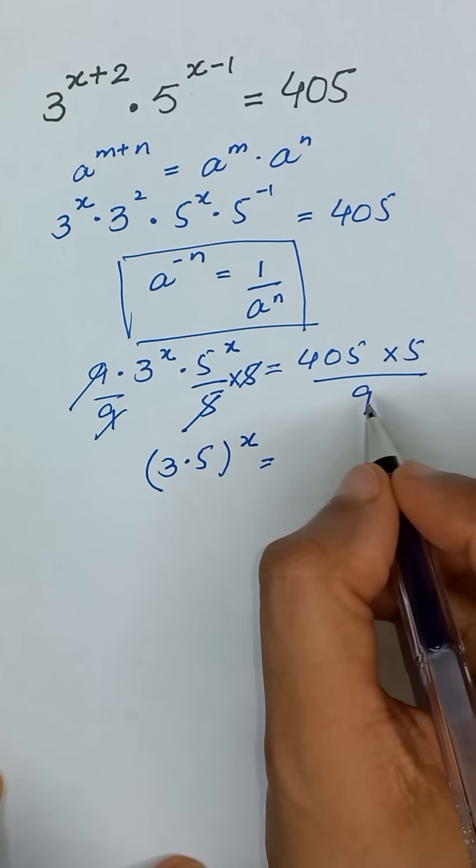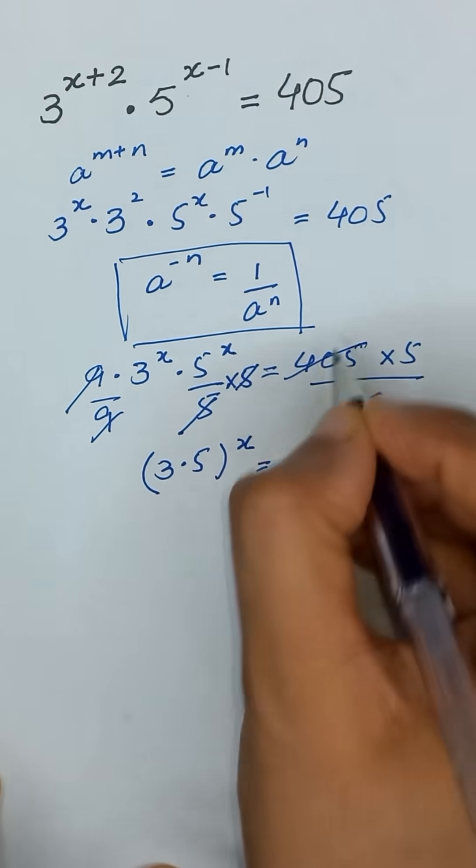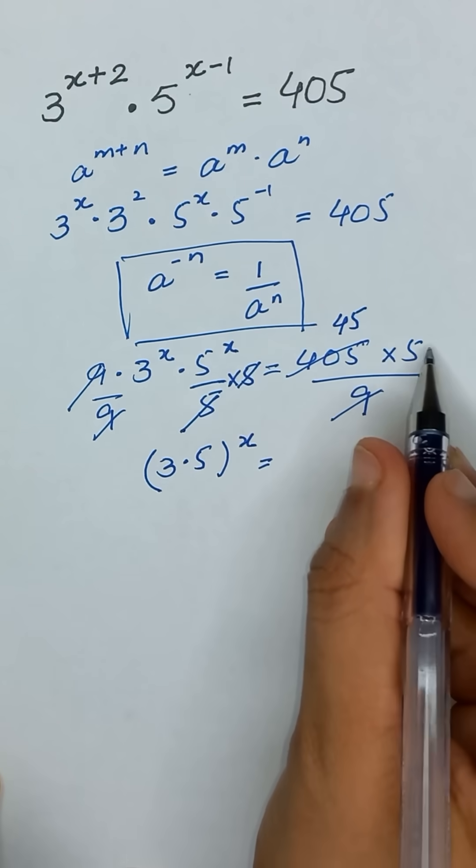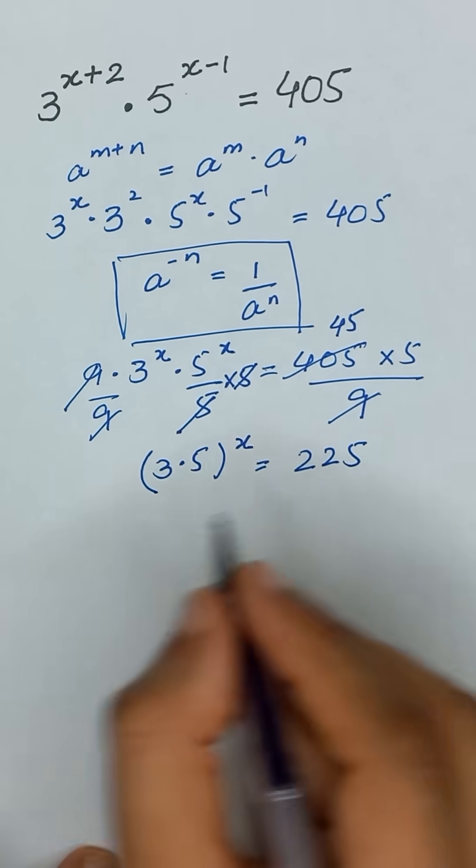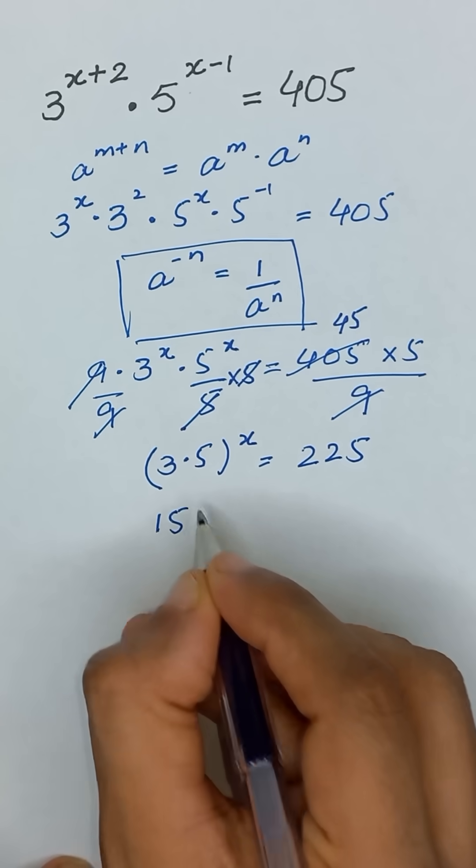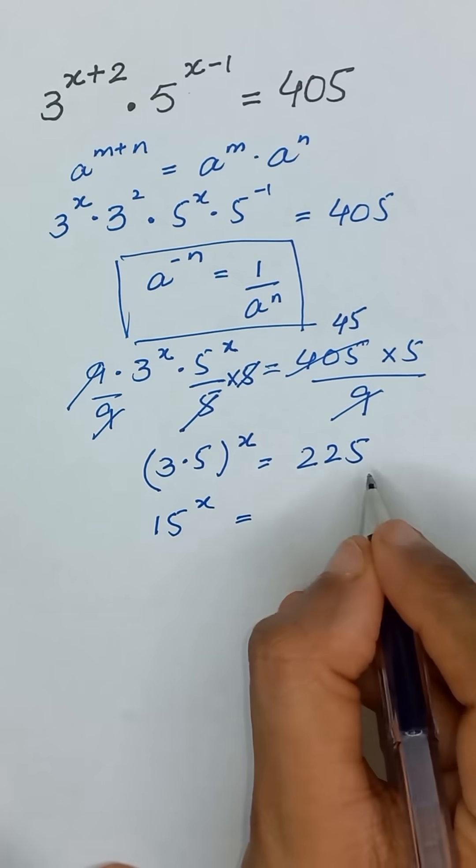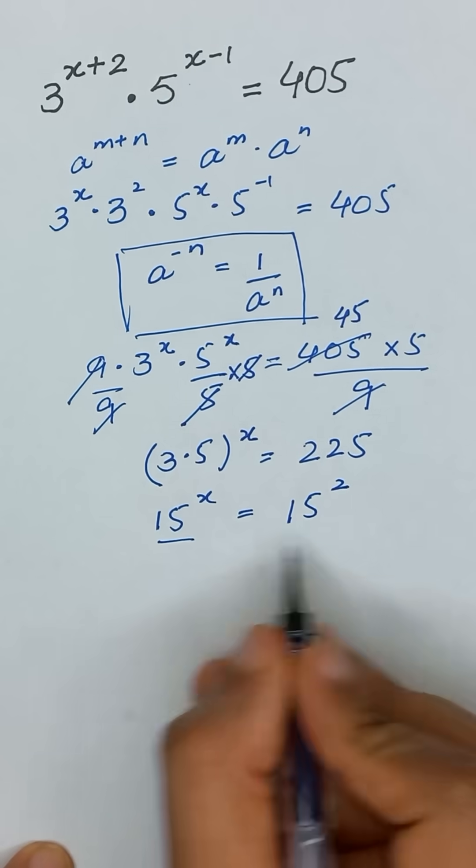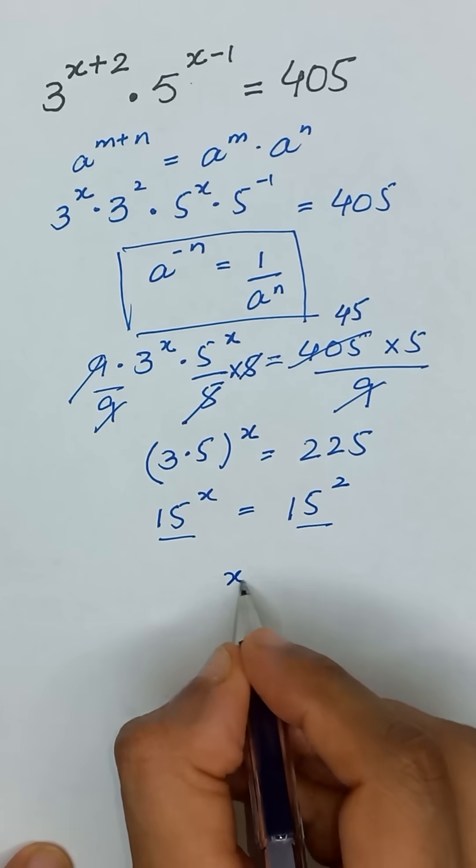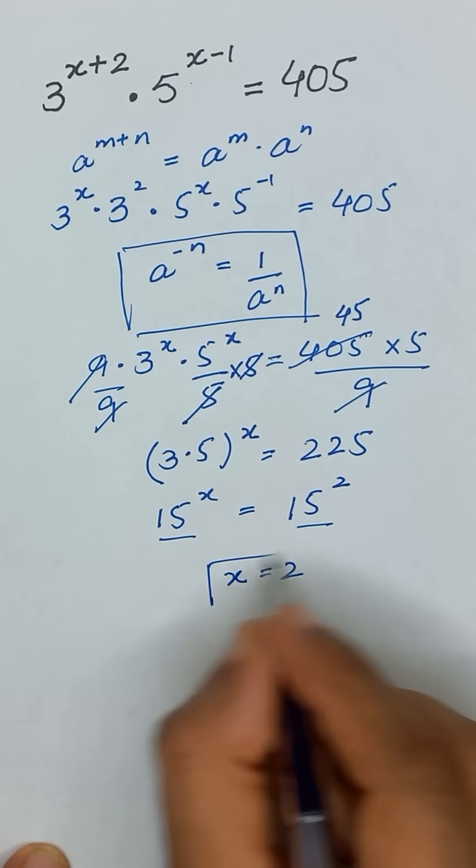This simplifies to 15 to the power x equals 225, which is the same as 15 squared. Now the bases are the same, so we can equate the powers. Therefore, the value of x is equal to 2.